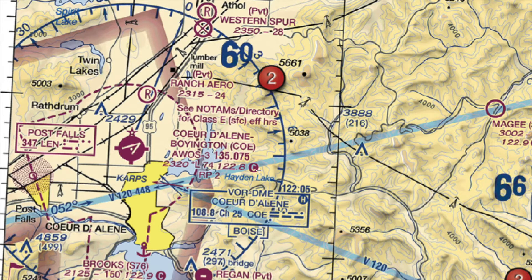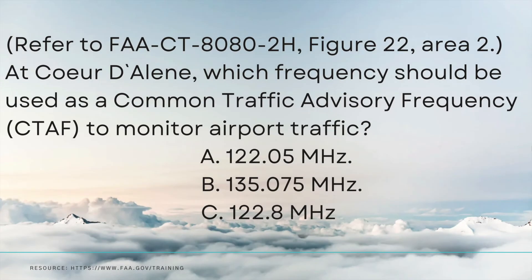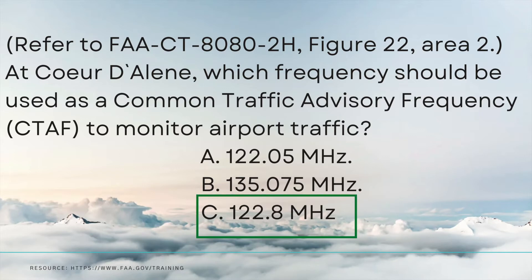Let's go back to the question and look at our options. We had A: 122.05, B: 135.075 — that was the AWOS frequency, so we can automatically eliminate that — and C: 122.8. The only other frequency at that airport was 122.8, and we know for a fact that's the CTAF because of the letter C. Therefore, the answer to this question is 122.8. That was a pretty simple one — let's move on to the next example problem.